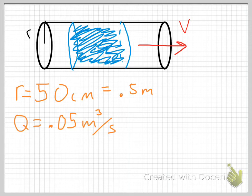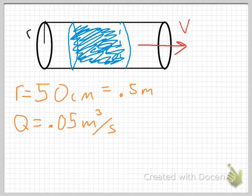In this example, I've given you a flow rate, which I've labeled Q, as 0.05 cubic meters per second. This is in a pipe of radius R, which is 50 centimeters — and I've gone ahead and converted that to 0.5 meters. I want to do that because my flow rate is given in cubic meters per second, so I want to keep the units consistent.